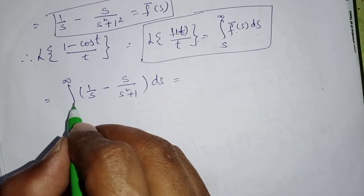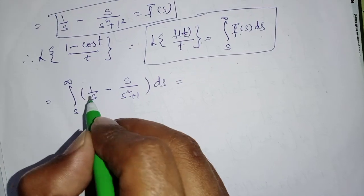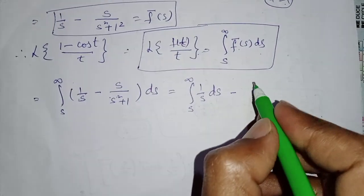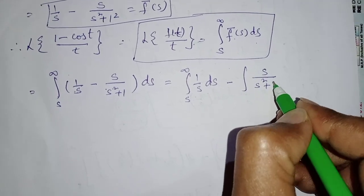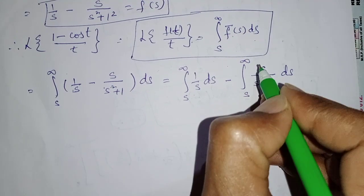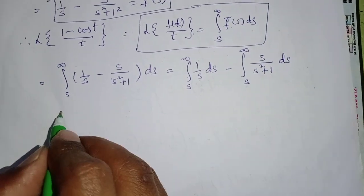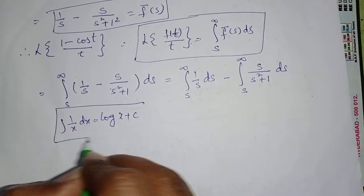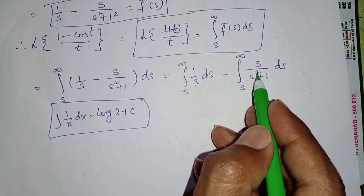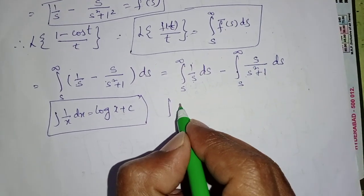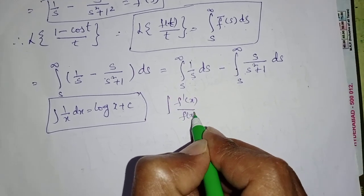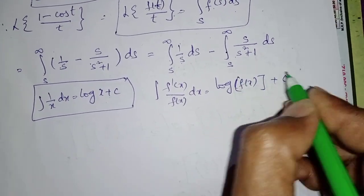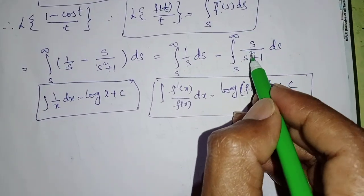Split the integral into two parts: ∫_s^∞ (1/s) ds minus ∫_s^∞ s/(s² + 1) ds. The integral of 1/s ds uses the formula ∫(1/x)dx = log x + c. For the second part, ∫ s/(s² + 1) ds, we use the formula ∫ f'(x)/f(x) dx = log f(x) + c.